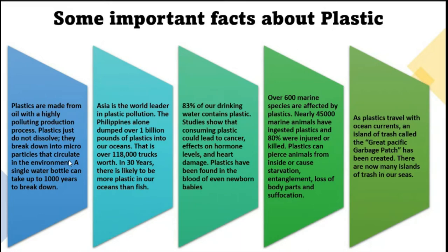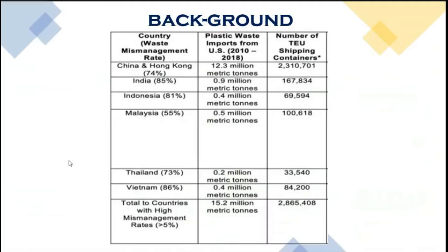As plastic travels with ocean currents, an area called the Great Pacific Garbage Patch has been created in the Pacific Ocean. Whatever garbage Asia dumps finds its way into that region, and many islands there are converted into garbage dumps. Studies show that China and Hong Kong have a plastic waste mismanagement rate of around 74 percent, while India's rate is 85 percent.